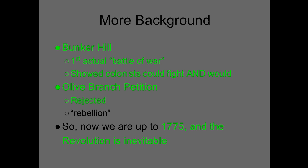In the Second Continental Congress, you also have the first actual battle of the war in the Boston area — at Bunker Hill. The main thing to take from Bunker Hill is that it showed colonists could fight and that they were willing to fight for these ideals. In addition, you have the last chance at peace rejected by Parliament and the English King — that was the Olive Branch Petition.